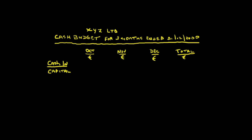When will we put the money in? The business is going to need it upfront, so we're going to put this in on the 1st of October. That's all we're putting in — we won't put in any more capital after that. So that's a total of 20,000 for the three months. That goes in in October, the first month.